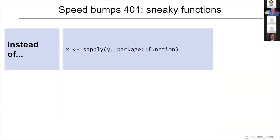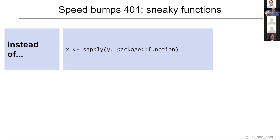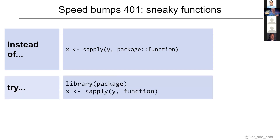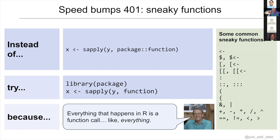This is one of my favorites — speed bumps 401, sneaky functions. Sometimes you can feel like you're doing all the right things but you still end up with slow code. Everything that happens in R is a function call — even things you don't expect to be function calls are function calls. For example, when looping over a vector and calling a function from a package using the double colon package::function syntax, that is not the optimal way to do it from a speed perspective.